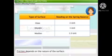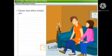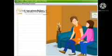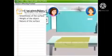With the same object, the readings noted on the spring balance varied every time we changed the type of surface on which it was dragged. This proves that the type or the nature of the surface also affects friction. So the factors that affect friction are the smoothness of the surface, weight of the object and the nature of the surface. Yes, that's right.